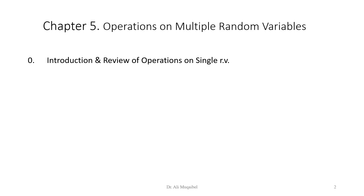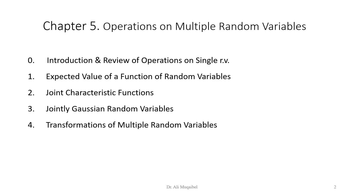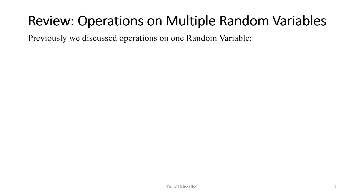We will start by reviewing what we did with single random variables, and then we'll go on to expected value of a function of a random variable, joint characteristic function, joint Gaussian random variable, transformation of multiple random variables, linear transformation of Gaussian random variables, and then sampling and some limit theorems. Basically the new focus here is operations on multiple random variables.